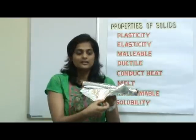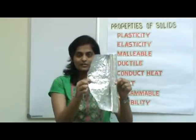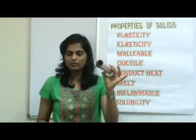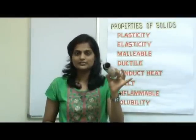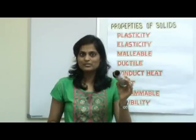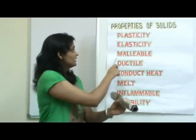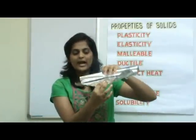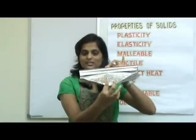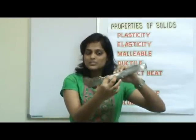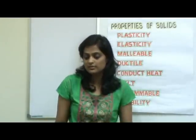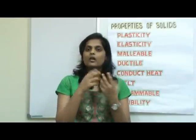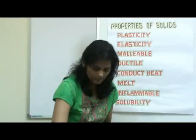Do you see this amazing sheet of aluminum which is rolled into such a small roll? 9 meters of this — how is that possible? That's possible due to the property of solids being malleable, which means that solids can be hammered into thin long sheets without breaking. Due to this property, it is possible to make airplanes, cars, utensils, and many other things.